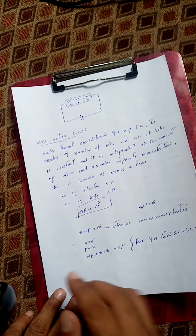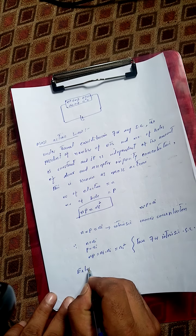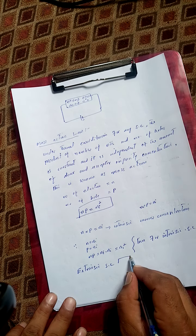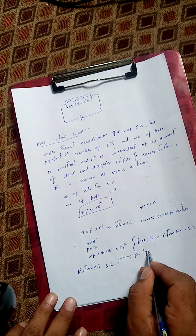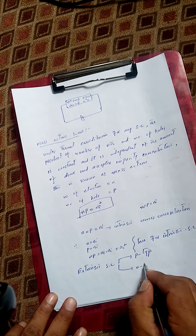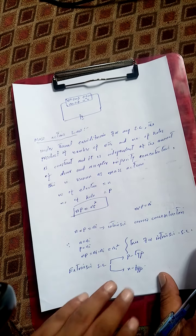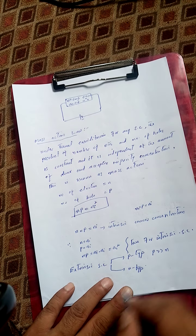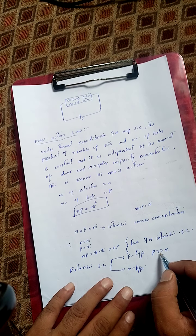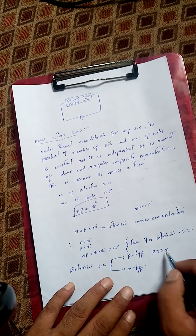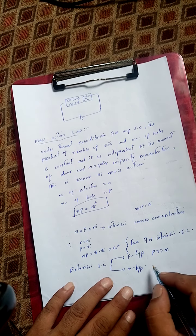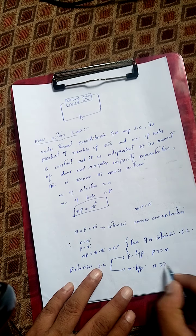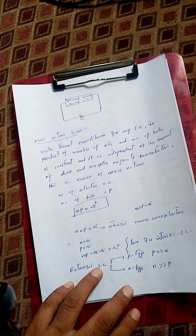Extrinsic semiconductors are of two types: one is P-type and the other is N-type. In P-type, the number of holes are far greater than the number of electrons — the number of holes in the valence band are far greater than the number of electrons in the conduction band. While in N-type semiconductors, the number of electrons in the conduction band are far greater than the number of holes in the valence band.